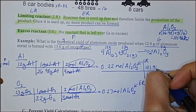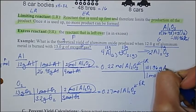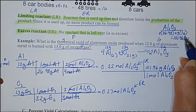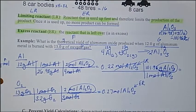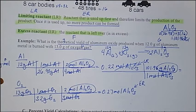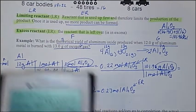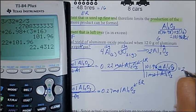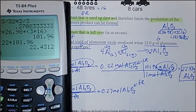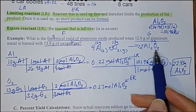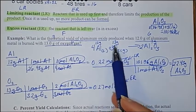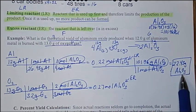So I'm going to write 101.96 grams of aluminum oxide — grams per mole, so grams is on top and moles is on the bottom. Now I can figure out exactly the amount produced: 0.22 times 101.96 gives me 22.43 grams of aluminum oxide that is produced. So whenever I'm given 12 grams of aluminum and 13 grams of oxygen, I will produce 22.43 grams of aluminum oxide.